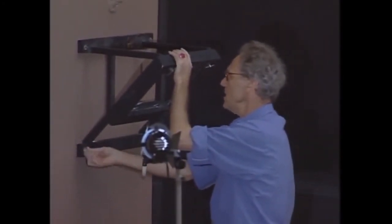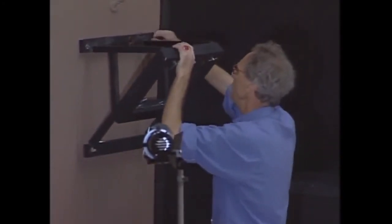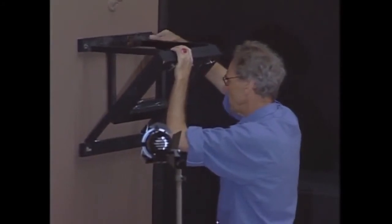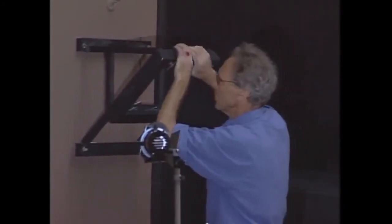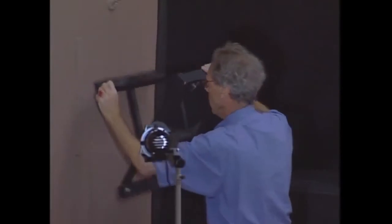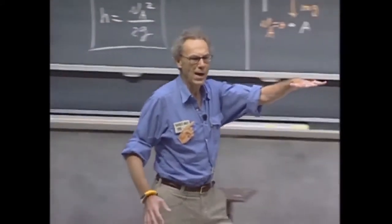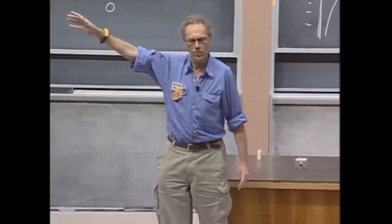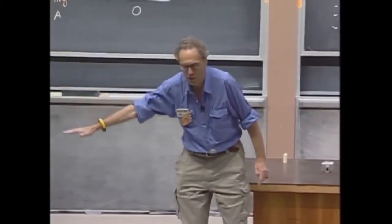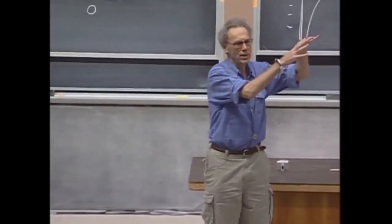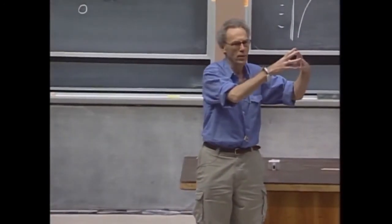If I release that bob from a certain height, then that bob can never come back to a point where the height is any larger. If I release it from this height and it swings, then when it reaches here, it could not be higher. There is a conversion from gravitational potential energy to kinetic energy back to gravitational potential energy, and it will come to a stop here.